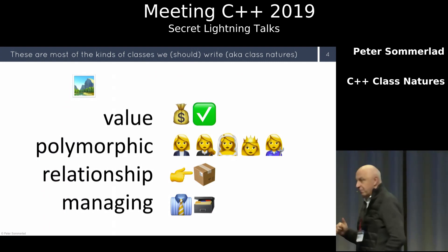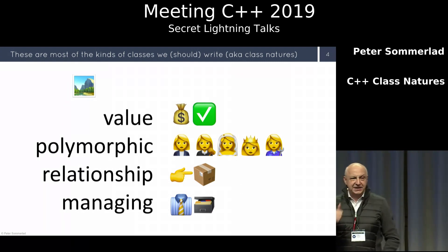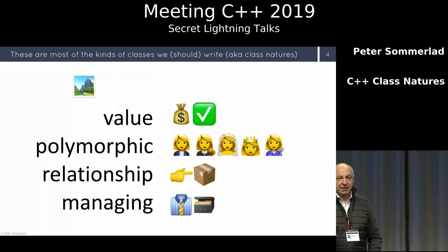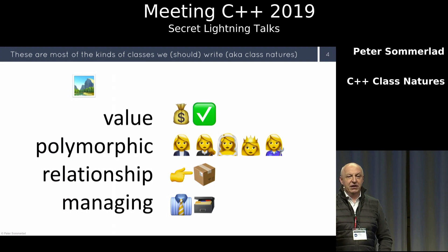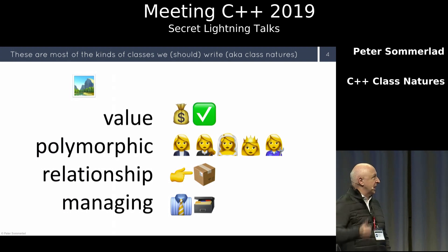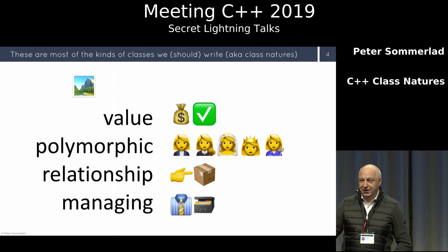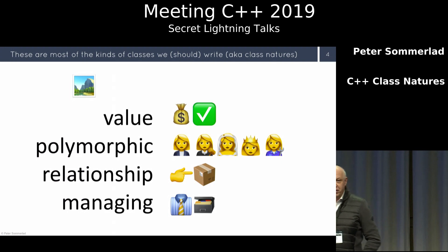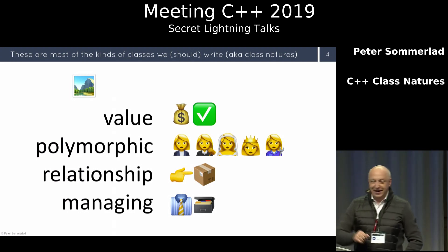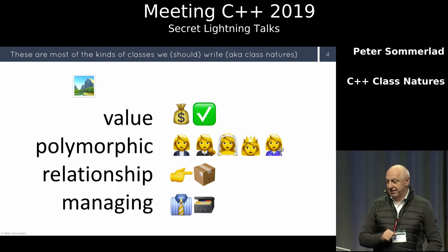To give you the natures of classes that we write: the one major class you should write in C++ is value types. Values just work. Full stop. Rule of zero is best.